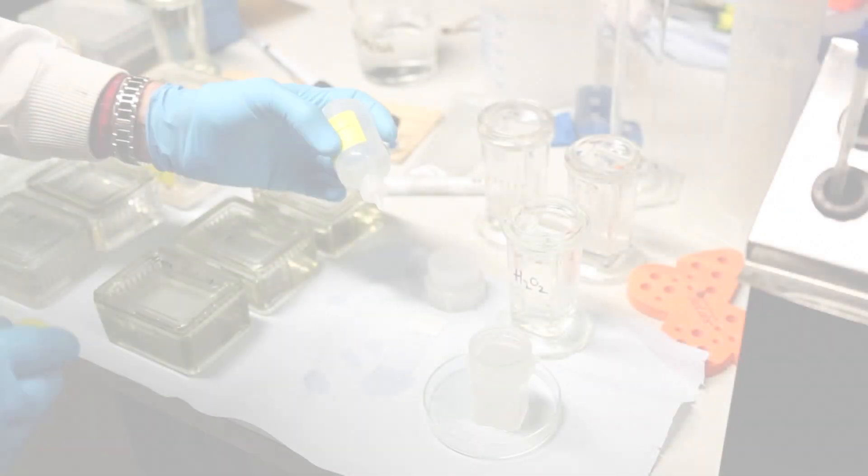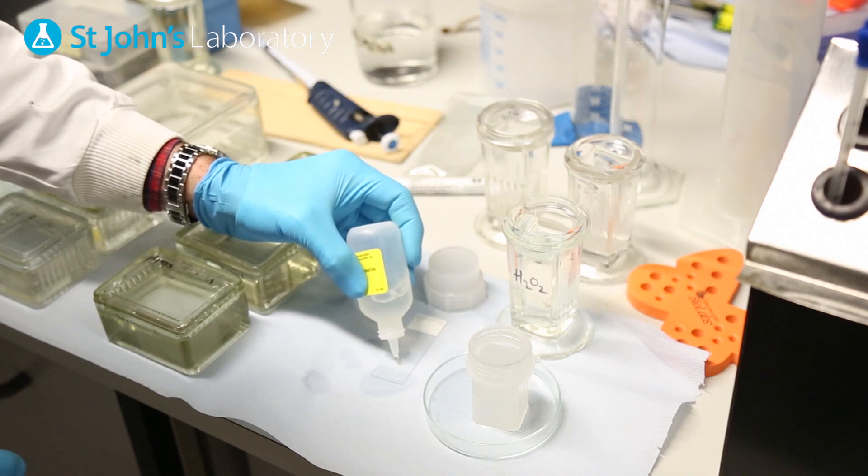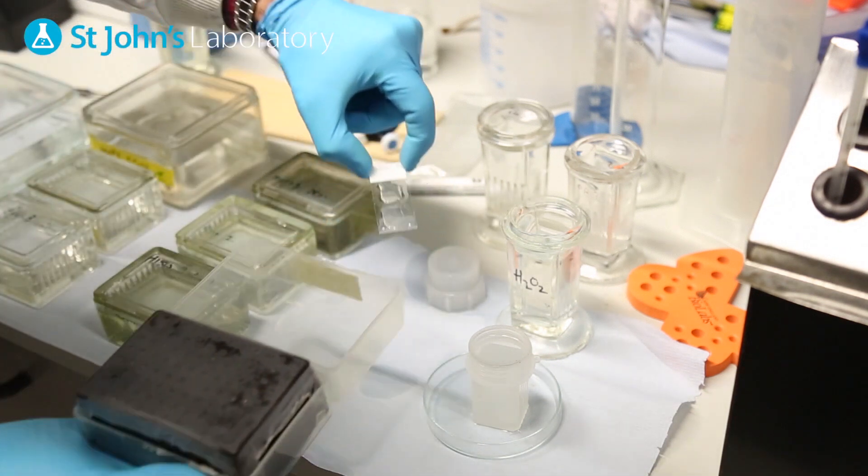To block the tissue background, use a PBS solution containing 10% BSA and place on a rocker in a humidified chamber for one hour.